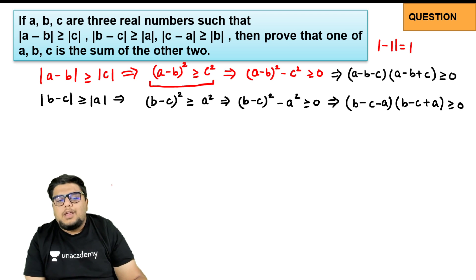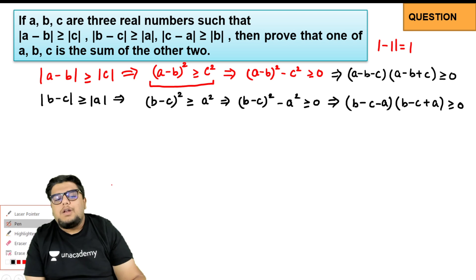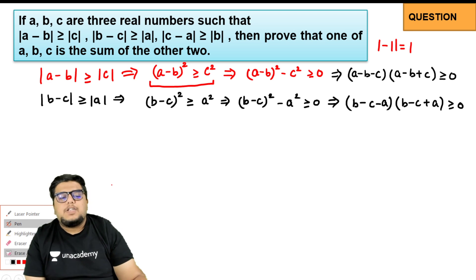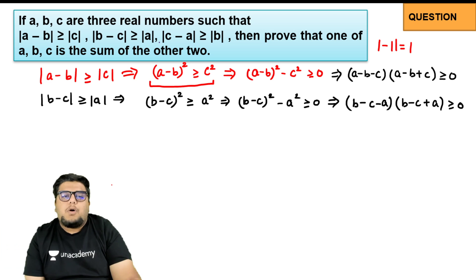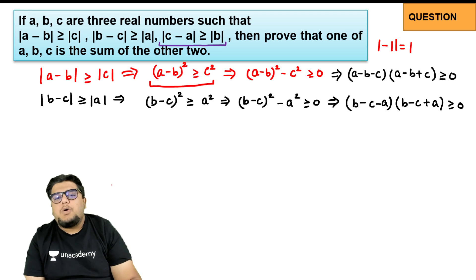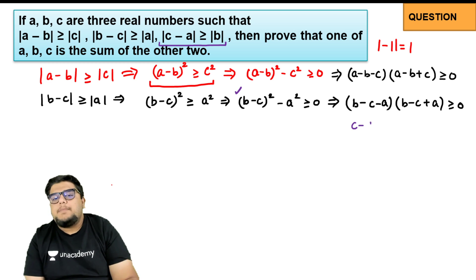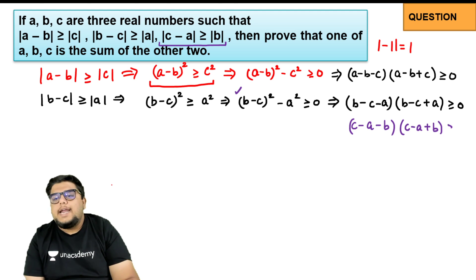For the third relationship, mod of (c minus a) greater than or equal to mod b: square it, do the same thing, and you get (c minus a minus b) times (c minus a plus b) greater than or equal to zero.